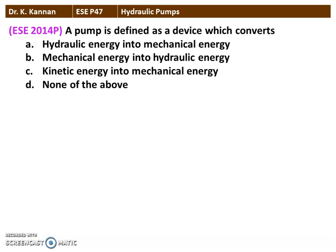The first question in Hydraulic Pumps from the 2014 question paper: a pump is defined as a device which converts — with four options: Hydraulic Energy into Mechanical Energy; Mechanical Energy into Hydraulic Energy; Kinetic Energy into Mechanical Energy; or none of the above. The correct answer is Mechanical Energy into Hydraulic Energy. The pump is connected with an Electrical Motor, which gives Mechanical Energy to the rotor or impeller, and the Hydraulic Pump converts that Mechanical Energy into Hydraulic Energy to increase the Head or Pressure of the Water.